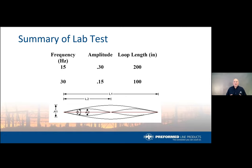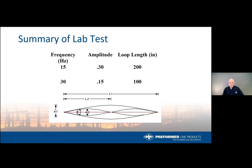We need to understand how conductor vibration affects the conductor and at what points. Aeolian vibration is a waveform comprised of nodes, anti-nodes, and loop lengths. Using these variables, we can determine the angle the conductor sweeps through at the node. We focused on the support location because when a conductor is tied there it cannot move, so any motion puts bending strain at that point. At in-span nodes, there's no actual damage because there's no strain — the conductor simply rocks back and forth.